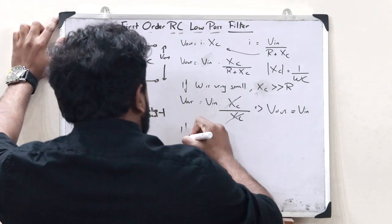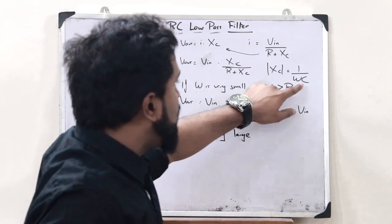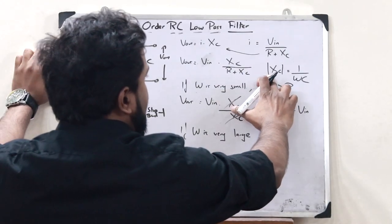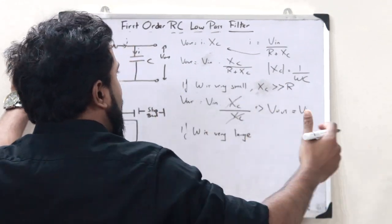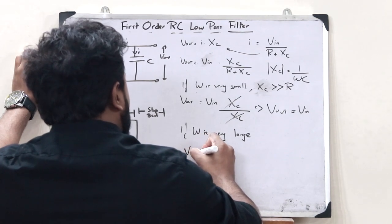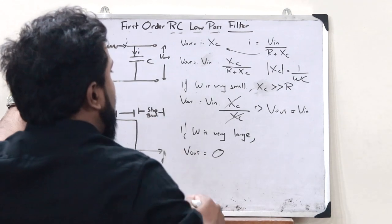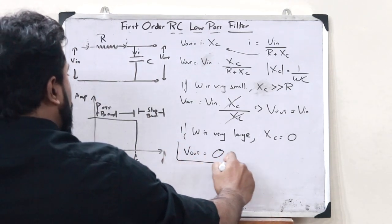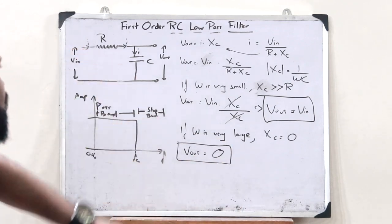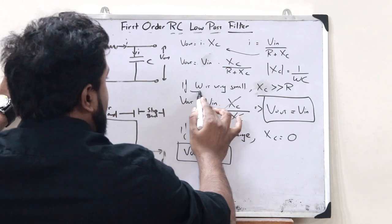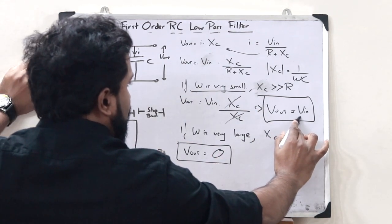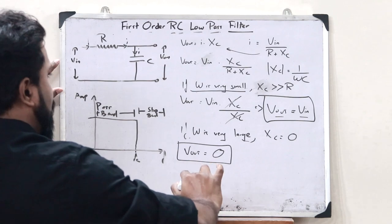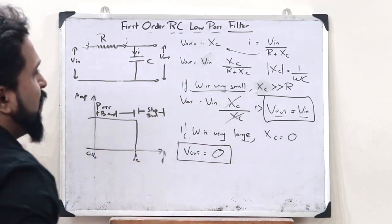Now let us see the case if ω is very large. If ω is very large, then X_C equals 1 divided by a very large value, so X_C approximately equals 0, and therefore V_out equals 0. This proves that this is a low-pass filter: when frequency is very small, the input signal passes through; when frequency is very large, no output is obtained.